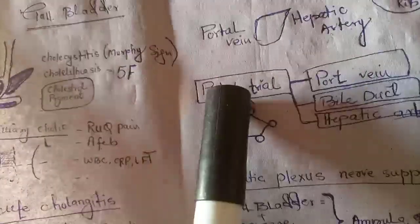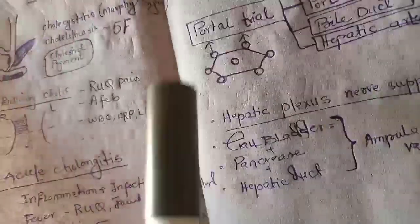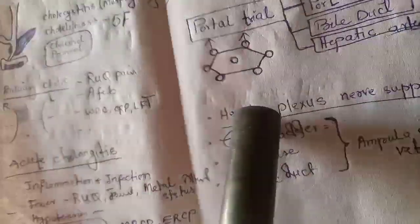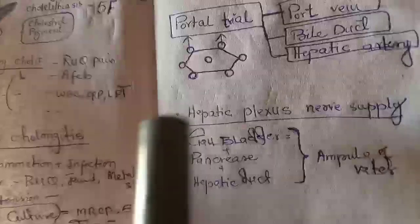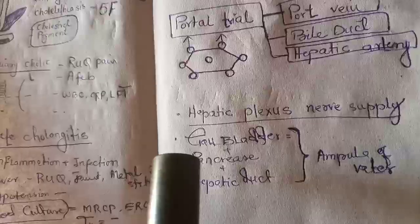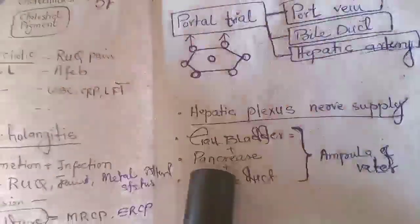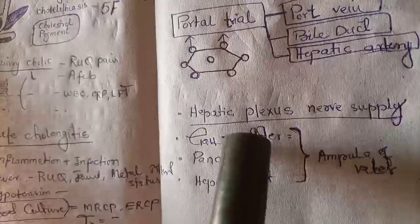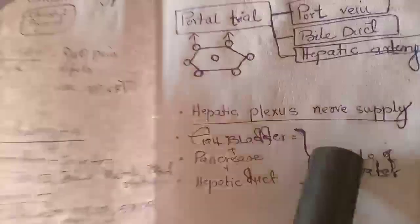Portal triad consists of portal vein, bile duct, and a hepatic artery. These three structures make portal triad and the hepatic plexus is the nerve supply to the liver.